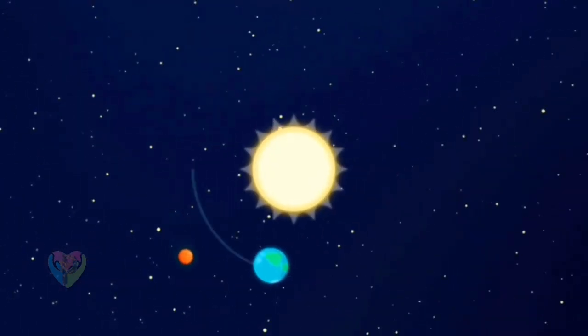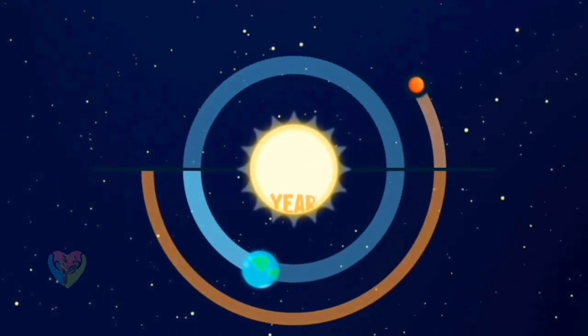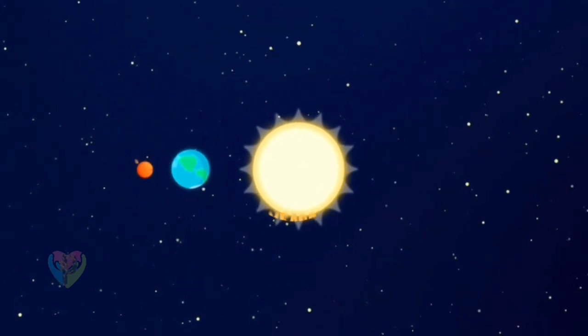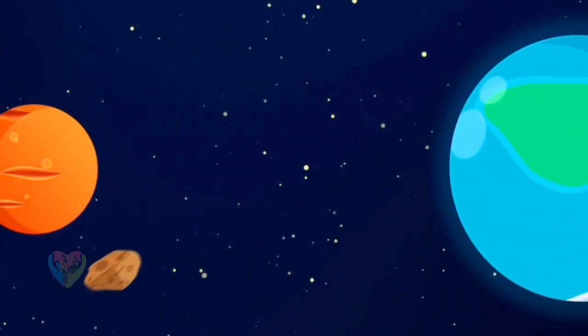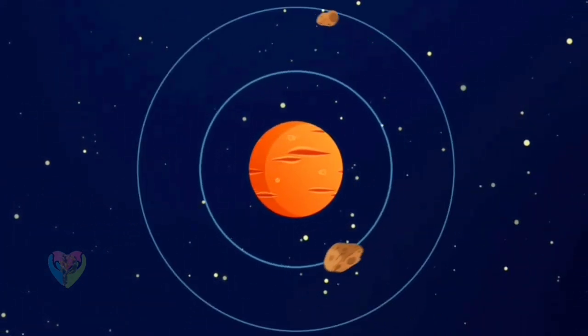Let's meet our closest neighbor, Mars. A Martian year is almost twice as long as on the Earth. That means that it takes Mars twice the time it takes the Earth to go around the sun. Just like the Earth, Mars has a satellite. Actually, two of them.